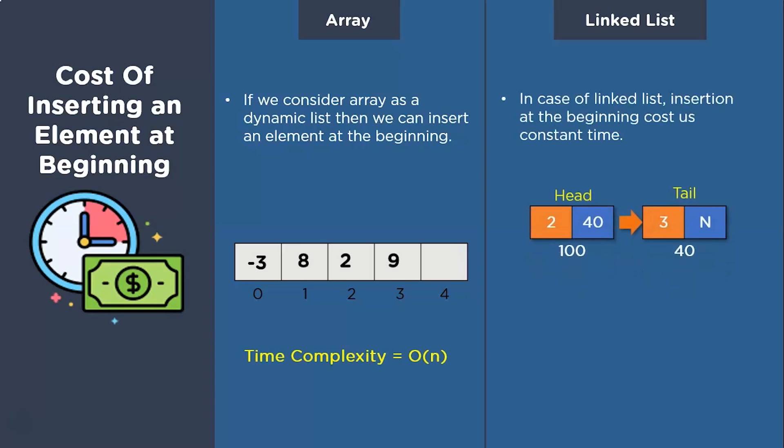For the insertion at the beginning of a linked list, we need a constant time because our compiler just remembers the address of the head node and inserting a new node does not require any extensive computation. Thus, the complexity of insertion at the beginning of a linked list is O(1).